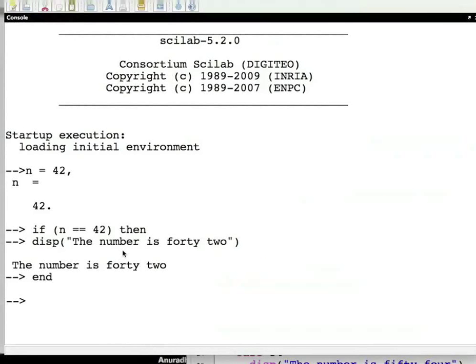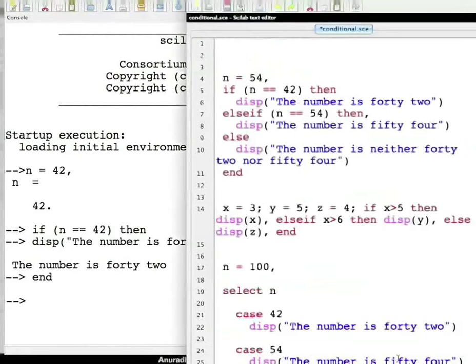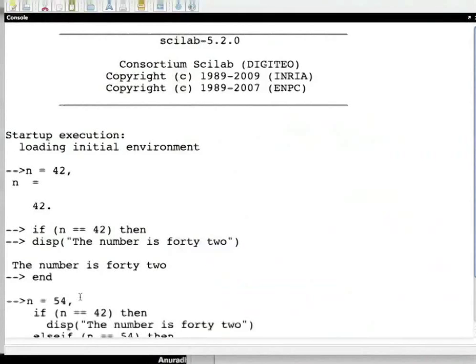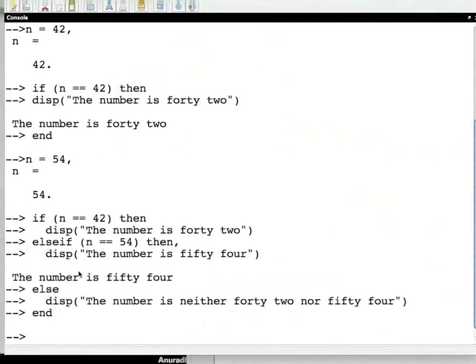Here is how we do it. In this example, 54 is assigned to variable n and checked for both true condition using if and false condition using else as described. I will cut this, paste in the Scilab console, hit enter. You see the output.